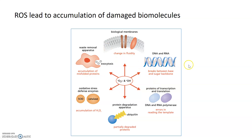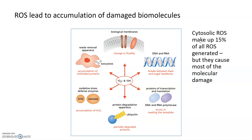So ROS can do a lot of different things: it can damage proteins, nucleic acids, and lipids. We're going to talk about some of these specific things ROS does to DNA and to membranes in the next couple of slides. It's important to note that when we talked about ROS generation, we focused on ROS generated through aerobic respiration in the mitochondria. But most of the cellular damage caused by ROS comes from cytosolic reactive oxygen species, which only make up about 15% of all ROS generated in the cell at any given time.